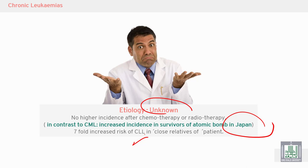There is a 7-fold increased risk of CLL in close relatives of affected patients. In some families, multiple cases of CLL can be seen due to the presence of accumulated genetic mutations. Therefore, taking a thorough family history from the patient may reveal that other family members have previously had CLL.